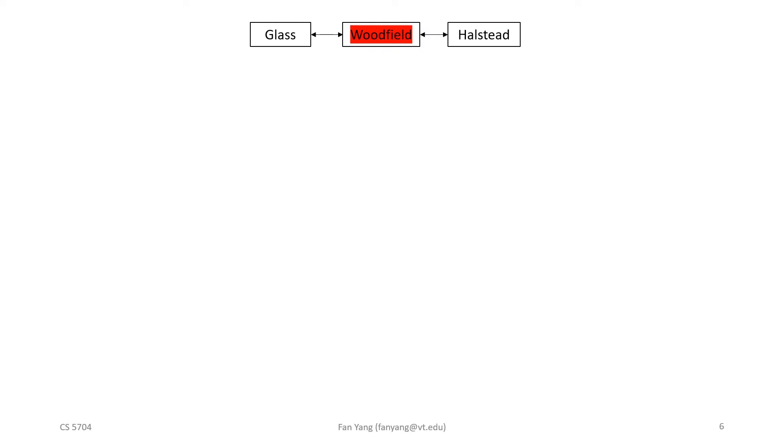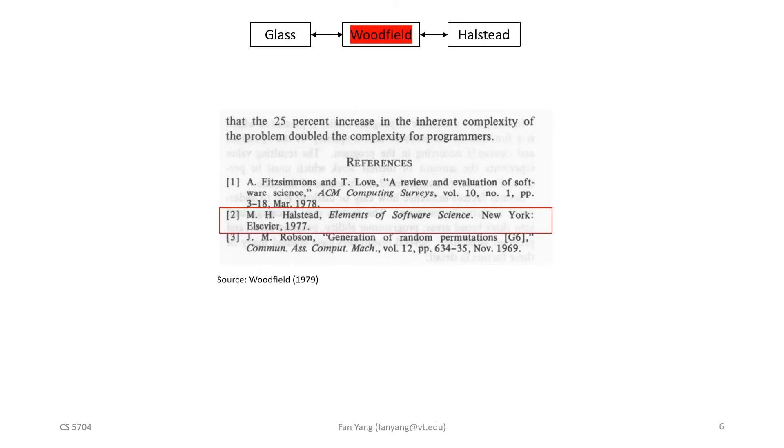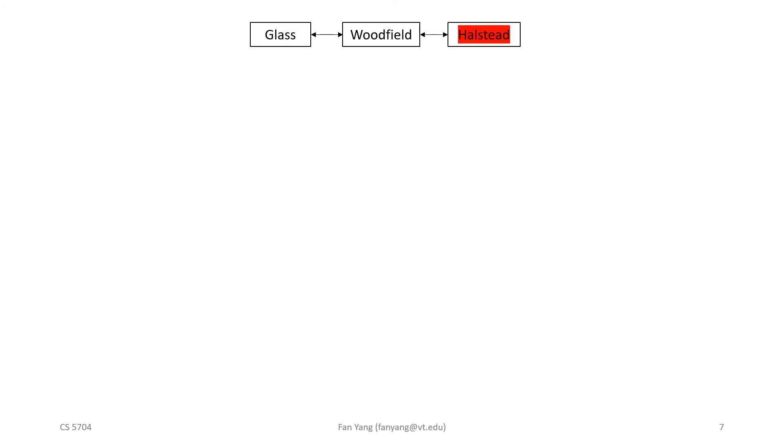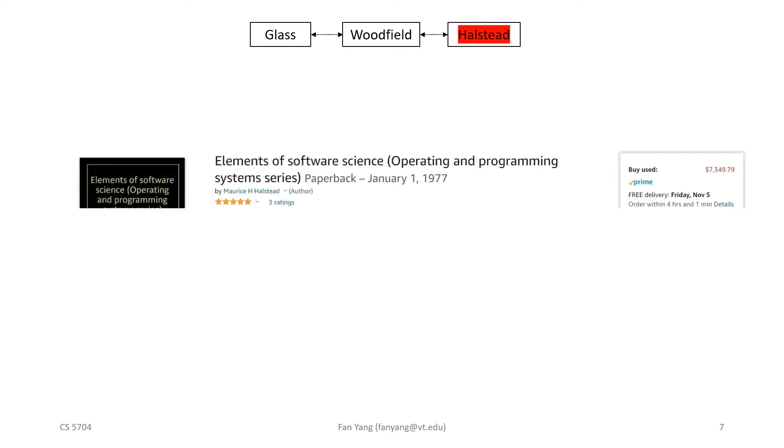Since equations are so central to this publication, to truly understand what's going on, we need to know where he got them. For that, we must turn to the book, Elements of Software Science, written by Maurice Halstead, published in 1977. This is one of the pioneering works in the field of software metrics. Unfortunately, I couldn't find a copy of this book for free, and it proved to be somewhat pricey. So I will briefly introduce this work using material from secondary sources.